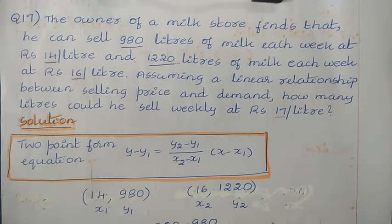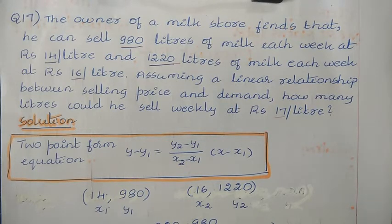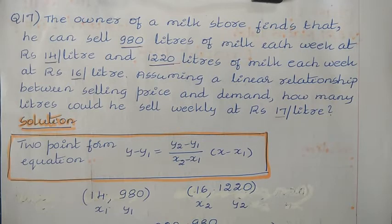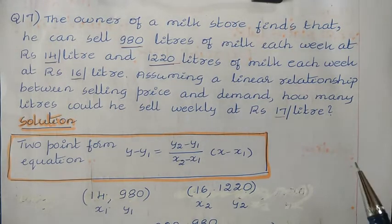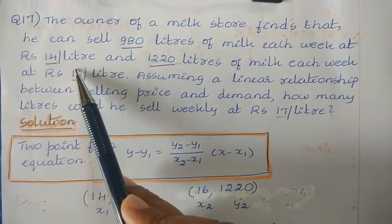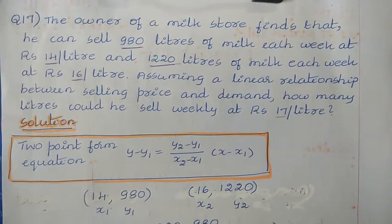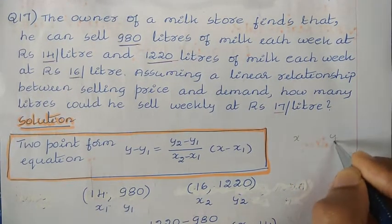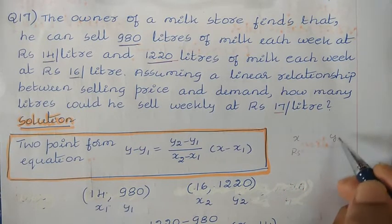Question number 17: The owner of a milk store finds that he can sell 980 liters of milk each week at rupees 14 per liter, and 1220 liters of milk each week at rupees 16 per liter. Assuming a linear relationship between selling price and demand, how many liters could he sell weekly at rupees 17 per liter?